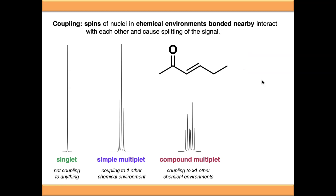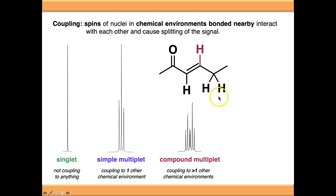We then have compound multiplets, where we're coupling to more than one chemical environment. An example would be this proton in reddish-purple here. There are two chemical environments on either side of this proton which are different, and this reddish-purple proton is within range of them both. It will couple to them both individually, giving us what I call a compound multiplet.